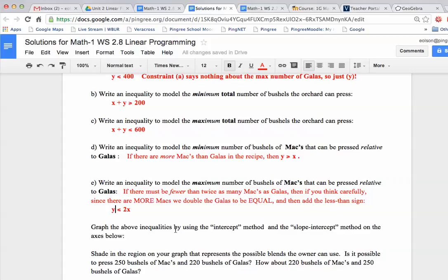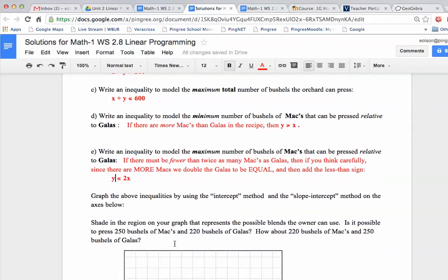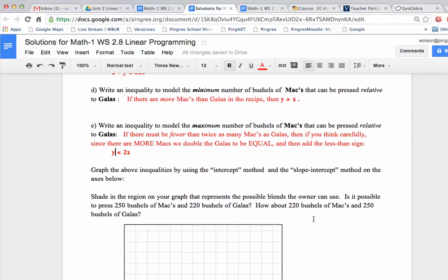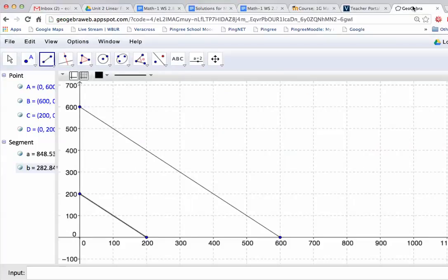It says graph the above inequalities using the intercept method and the slope intercept method on the axes below. And then it says shade in the region in your graph that represent the possible blends the owner can use. And then there's a couple of questions to be answered. Well, I'm going to jump to our GeoGebra graphing axes. This is an application that you guys are going to download, not download even, just use it as a web application. It's awesome, it's free, it's very easy to use. It looks like this. You get these tools across the top, and you get these axes you can click on right here.